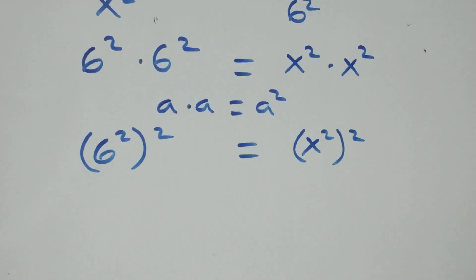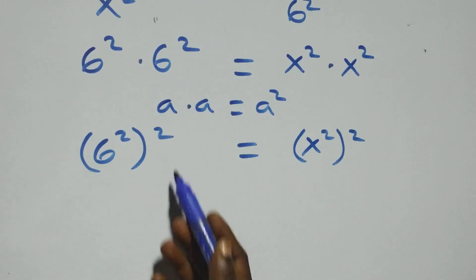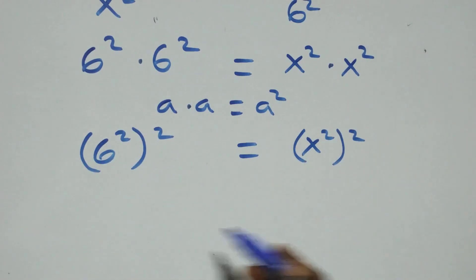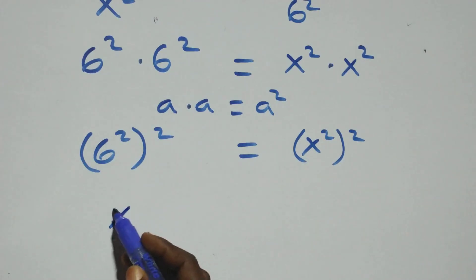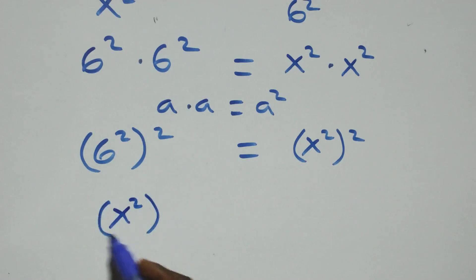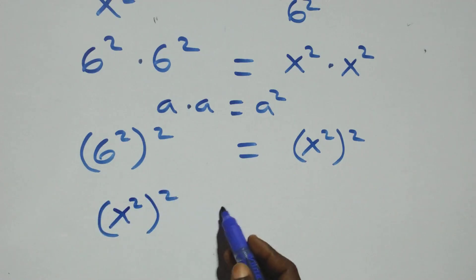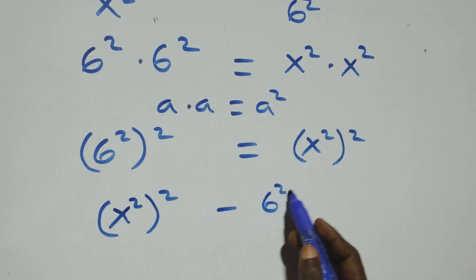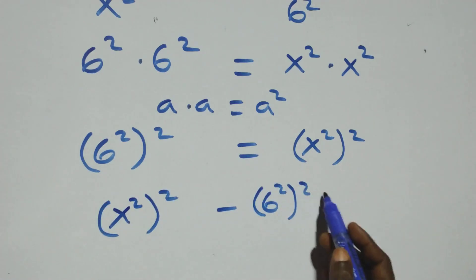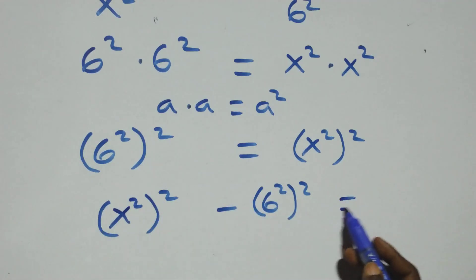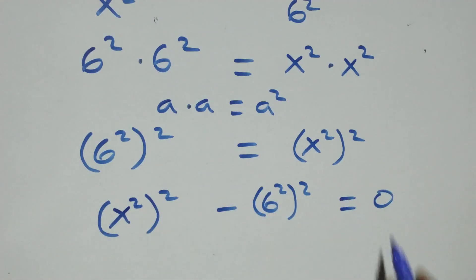The next step here: bring everything to one side and take this side to the other side. So we have x squared all squared, minus 6 squared all squared, which leaves 0 on this side.